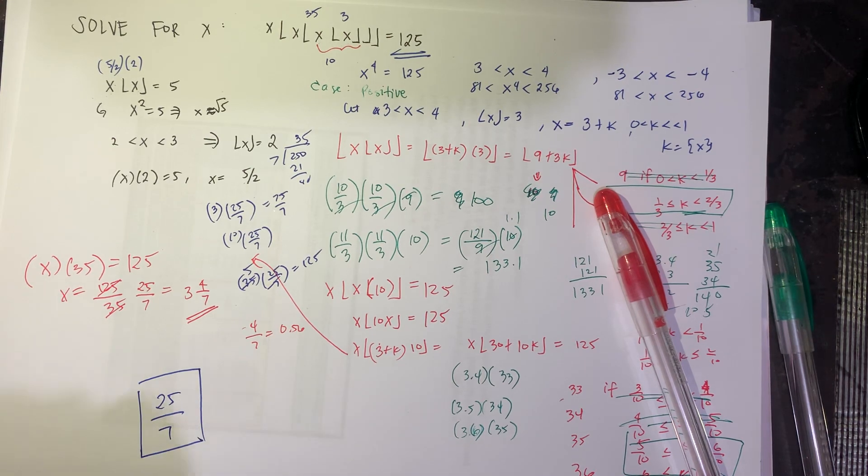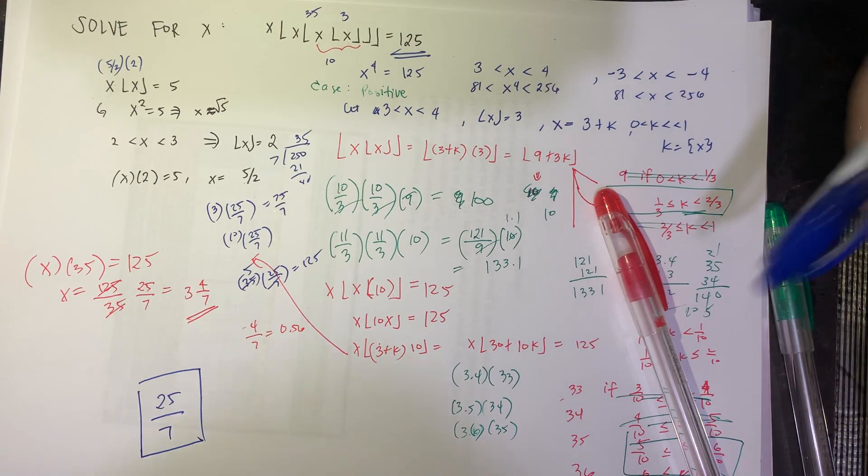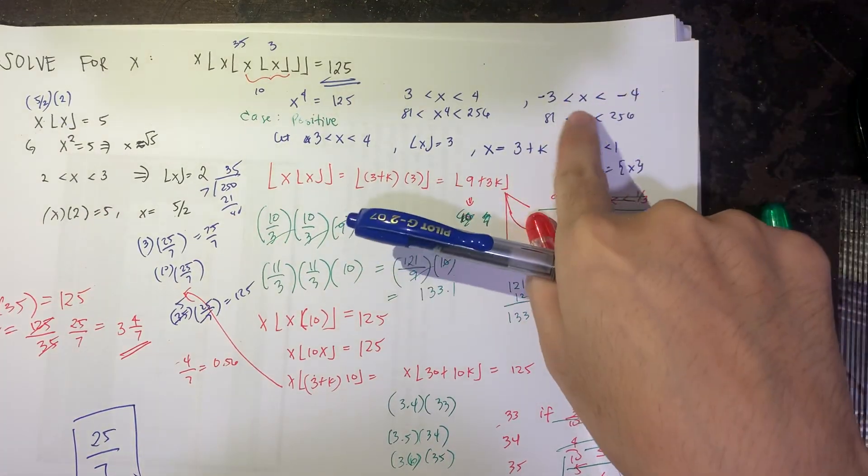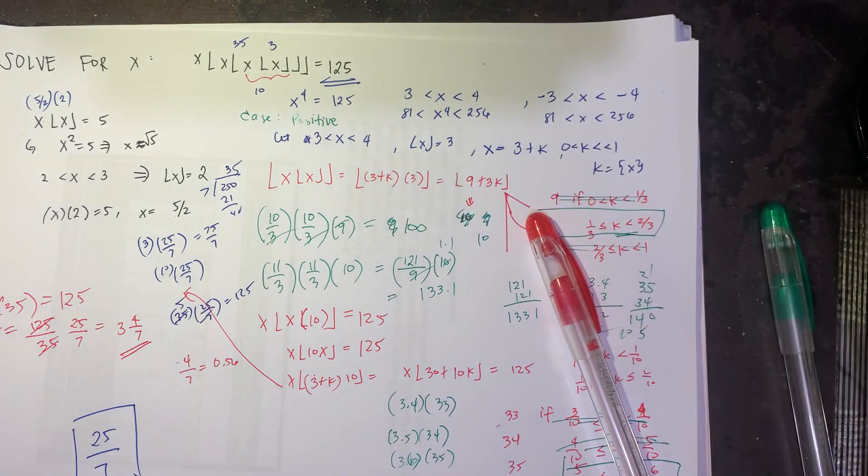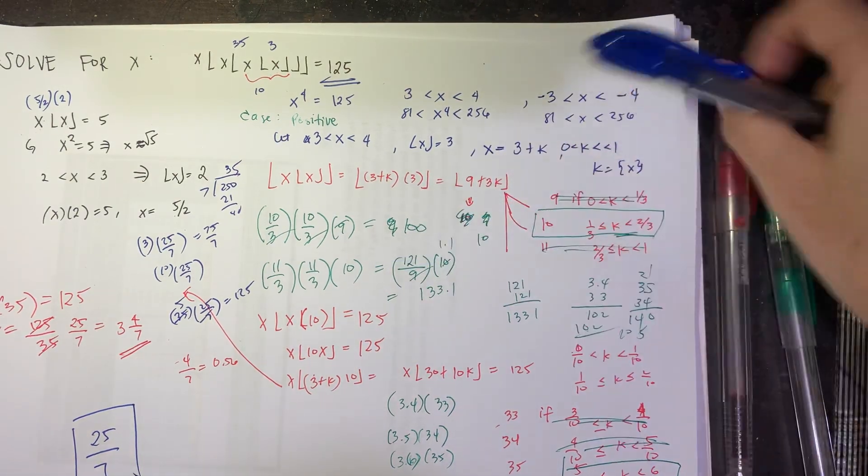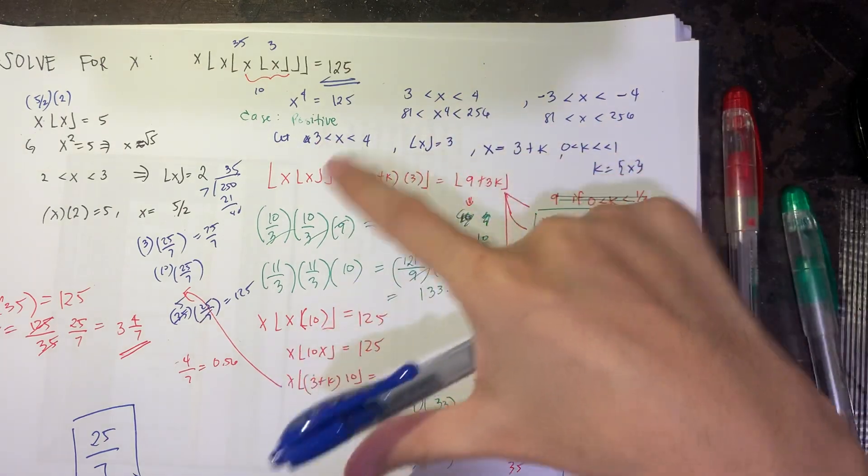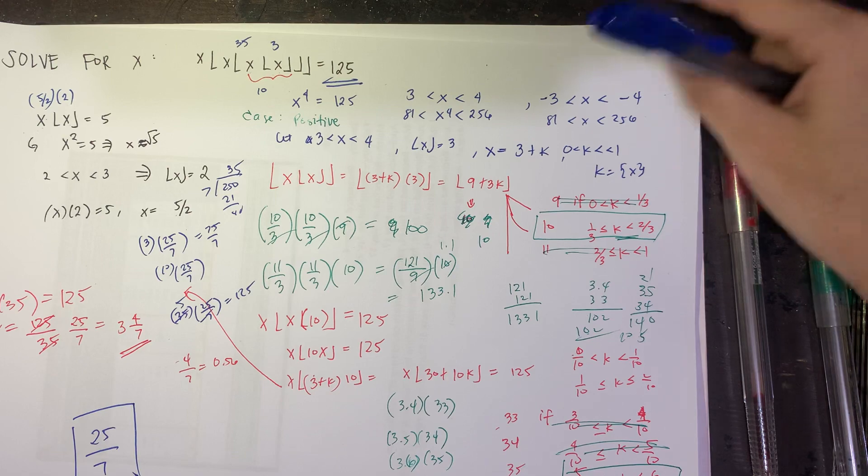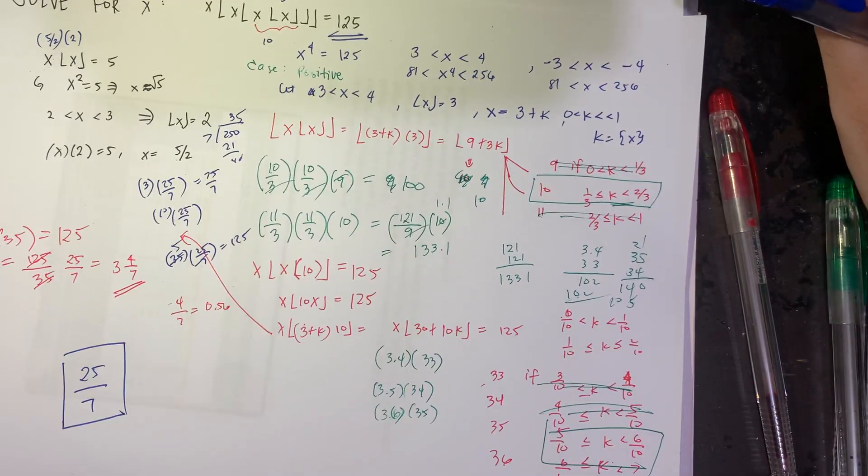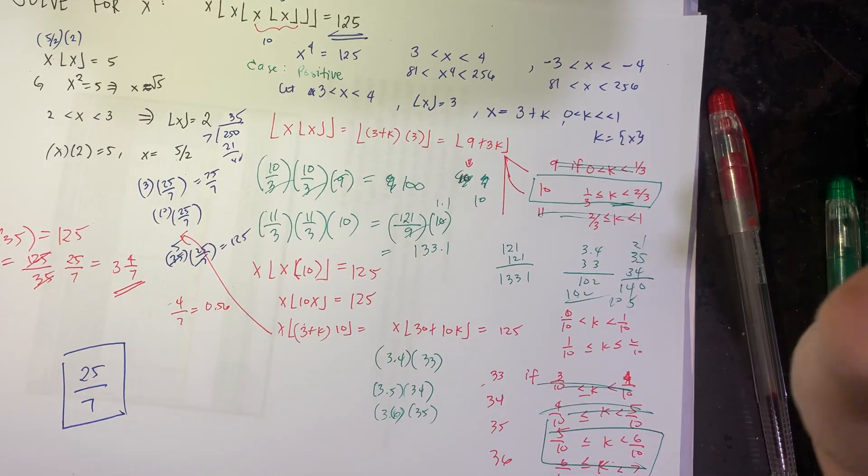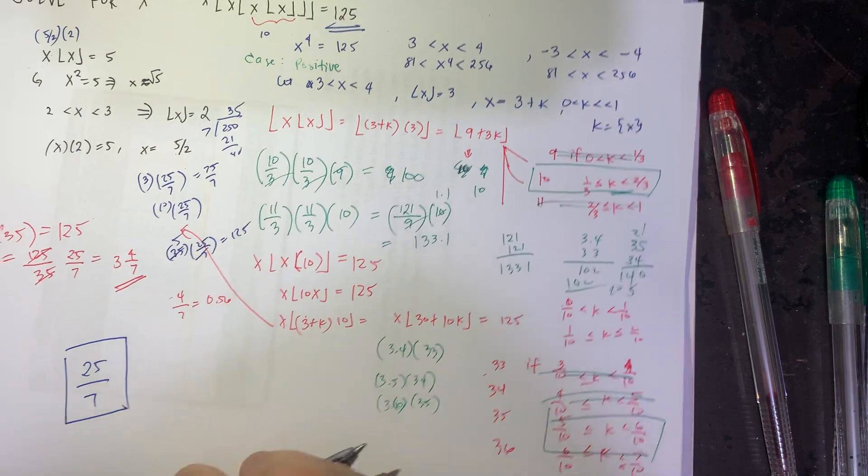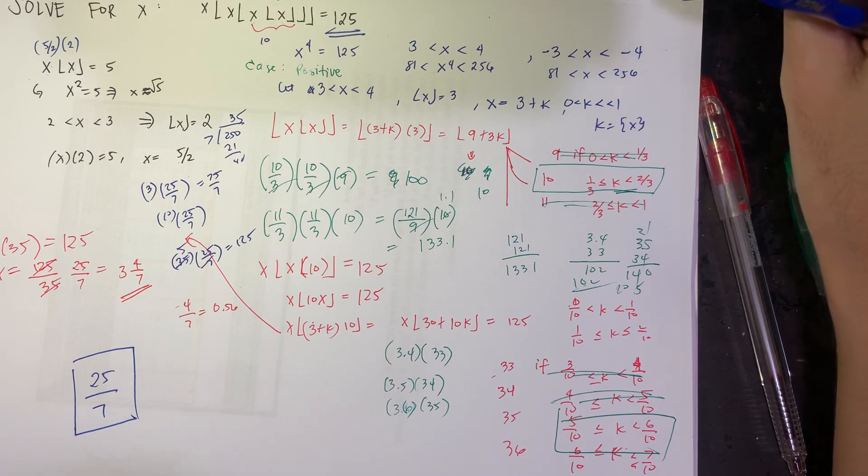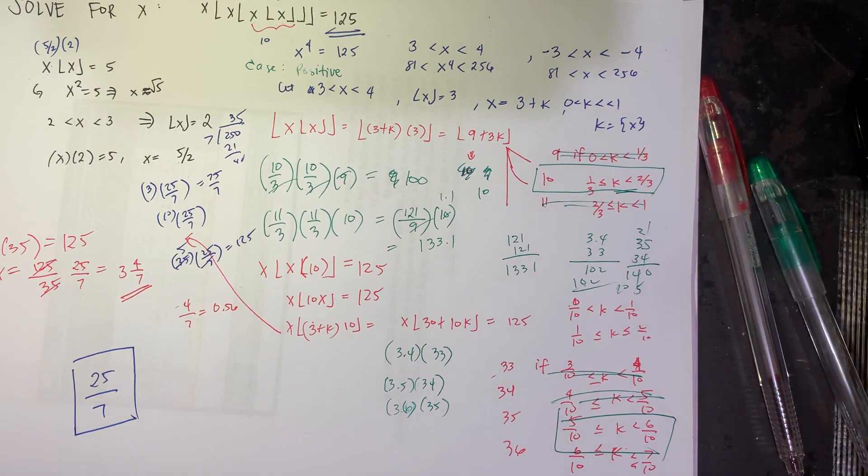Pero yung problem natin dito is, this is not the only answer. In fact, there is another one, which is for the case when it's negative. Between negative 3 and negative 4. So the case, the solution is very similar to this one. So you do case to case basis and then you can find the actual value of x. But as this video is quite long already, I'm leaving that problem to you. If you are able to find the answer, the negative answer, let me know in the comment section. That's it for this video.